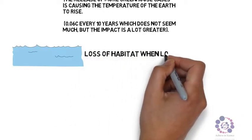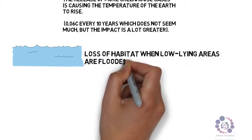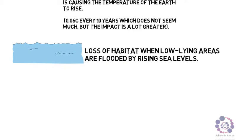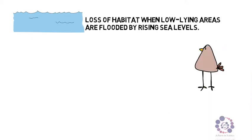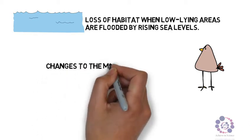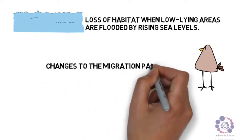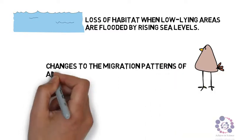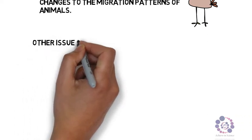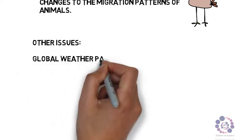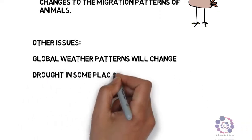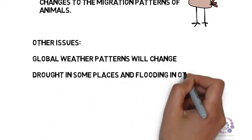The impact could be loss of habitats when low lying areas are flooded by rising sea levels. There could be changes to the migration patterns of animals. Other issues include global weather patterns changing, drought in some places and flooding in others which causes issues for food supply. The melting of polar ice caps will raise sea levels causing increased coastal erosion and flooding of low lying land.